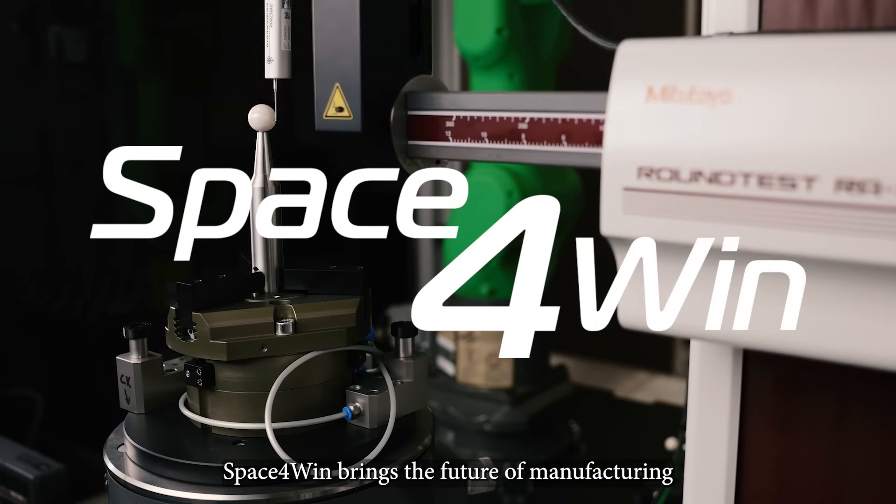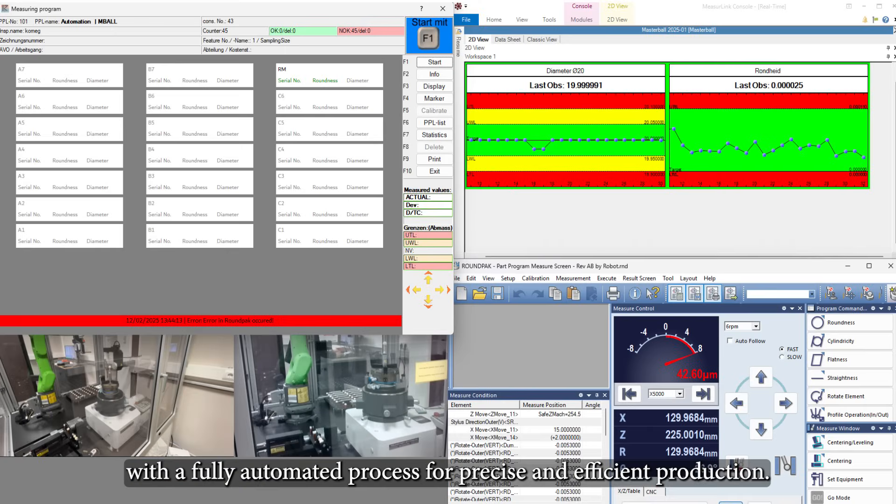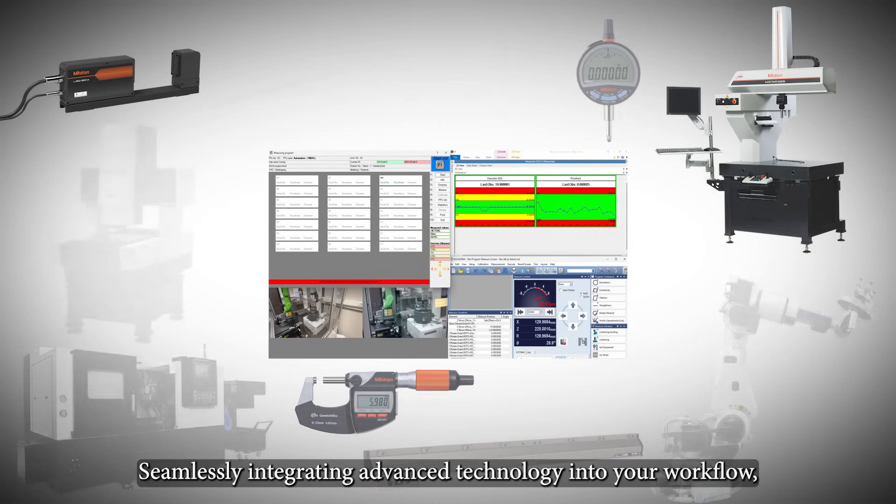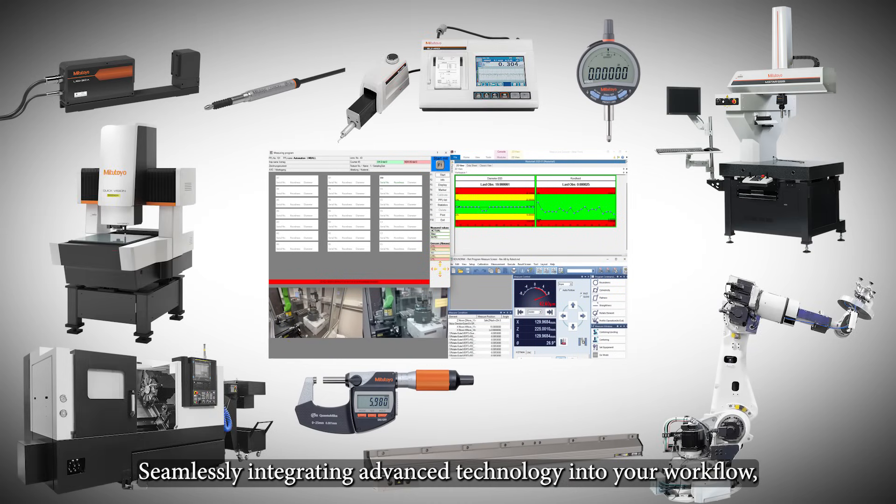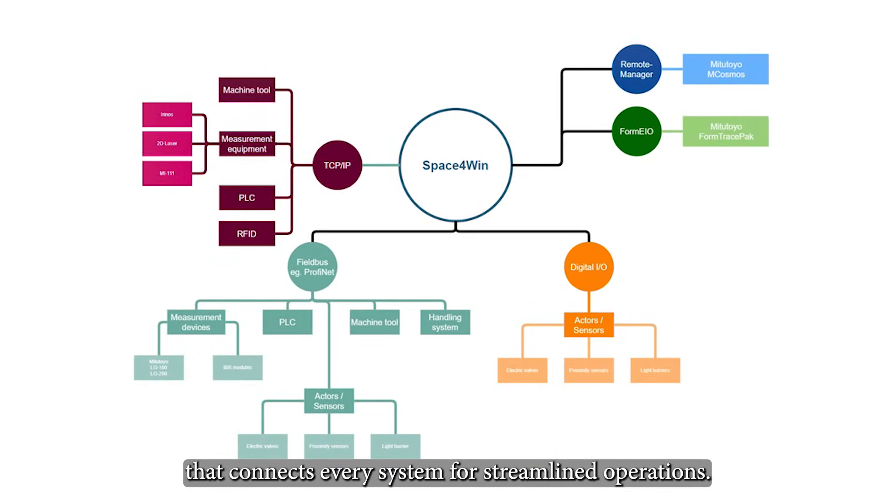Space for Win brings the future of manufacturing with a fully automated process for precise and efficient production, seamlessly integrating advanced technology into your workflow. Space for Win acts as the central automation platform that connects every system for streamlined operations.